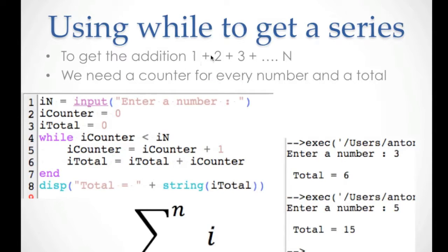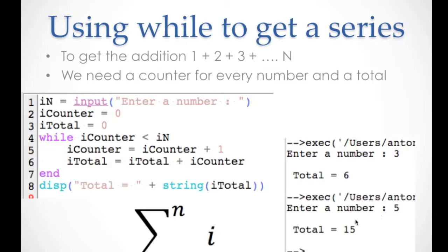We can also use a while loop to compute a series — for example, the sum from one to N. We get a value for N, then initialize icounter to zero and itotal to zero. While icounter is smaller than N, we increase icounter by one, and then add icounter to itotal. The counter is what changes each iteration, not N itself. For example, the sum from one to three is six, and the sum from one to five is fifteen.